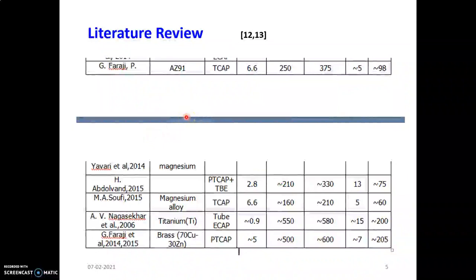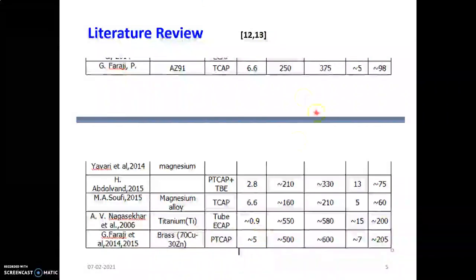I will explain certain literature review on this area. These are scientists who worked on this process. Faraji worked on material AZ91 and used the process of two channel angular pressing and got these hardness values, yield strain, and deformation values. Zhao worked on magnesium alloy using ECAP process and got a hardness value of 160. Nagasekhar worked on titanium and Faraji worked on brass using parallel tube channel.